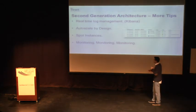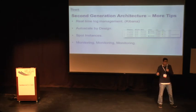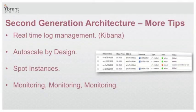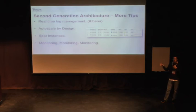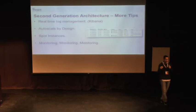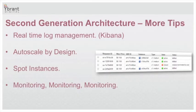For real-time log management we are using Kibana — a very interesting project backed by Elasticsearch. Autoscale by design: it's not a simple thing to achieve autoscale in Amazon. It's not right-click autoscale; you need to work hard building the architecture around it and design each layer to be autoscalable. We are also using Spot instances of Amazon, which is real-time bidding on instances. This is how we managed to save 70% of our expenses — we pay 10% of the original instance price when working with Spot instances.